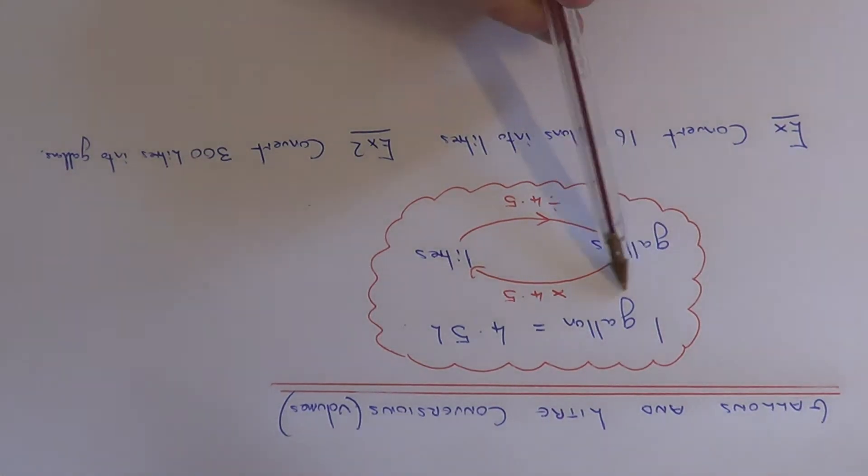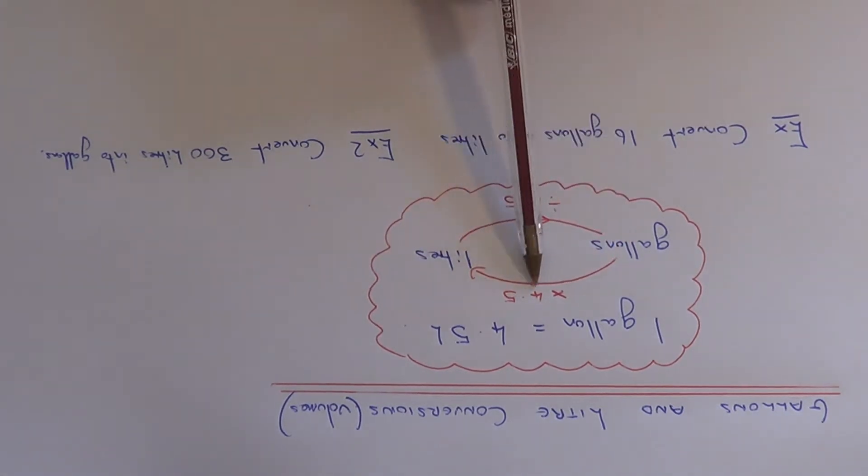To do this you need to know that a gallon is about the same size as 4.5 litres. So if you need to convert gallons into litres you need to multiply the number by 4.5, and if you're converting the number back from litres into gallons you need to divide by 4.5.